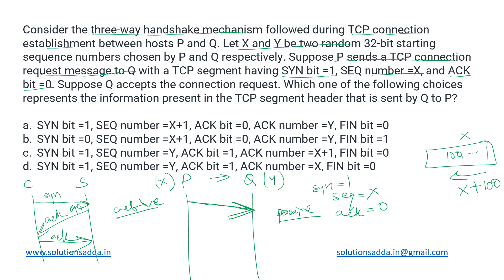Now Q has to respond. Suppose Q accepts the connection request — which of the following choices represents the information in the TCP segment header sent by Q to P? P had sent a connection request, so Q must acknowledge it, meaning the ACK bit must be 1. Q also needs to establish the connection from its own side, so it will send SYN bit equal to 1 as well, because connection must be established on both sides.